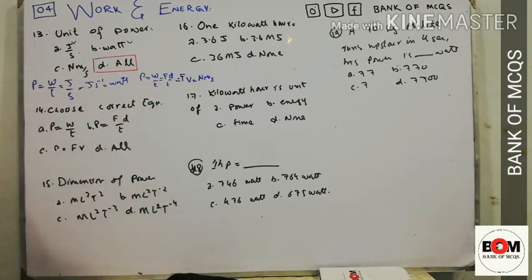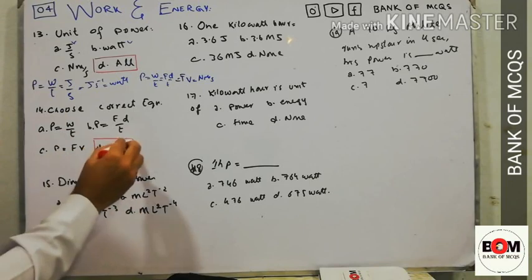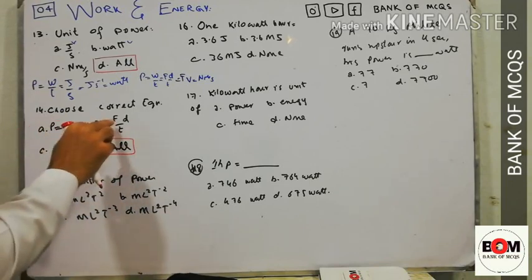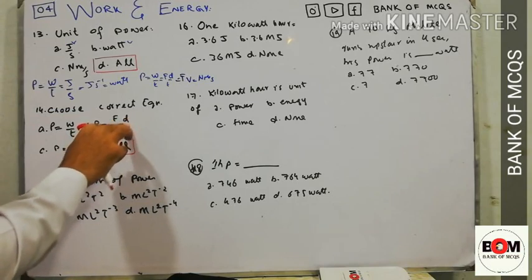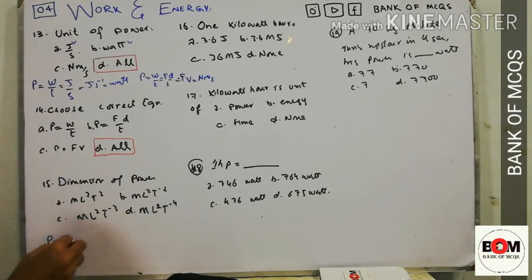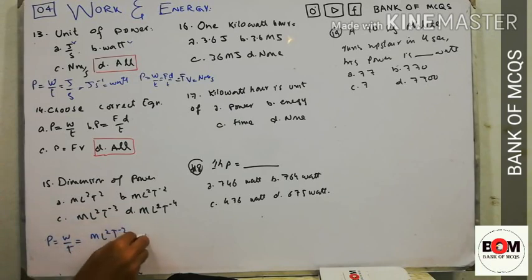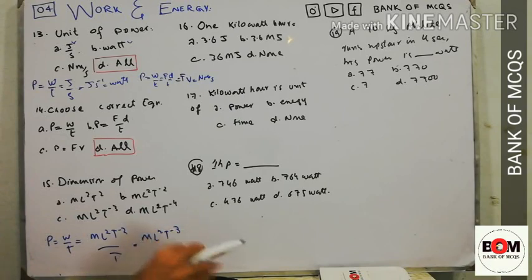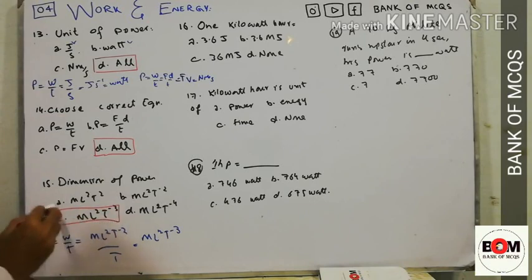MCQ: choose the correct equation for power. We derived P = W/t. Since W = F·d, we can also write P = F·d/t = F·v. The dimension of power: dimension of work is ML²T⁻², divided by T gives ML²T⁻³. So option C for the dimension is correct.